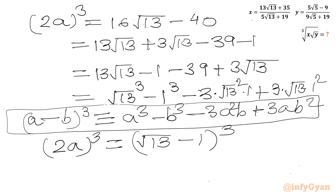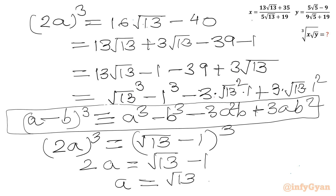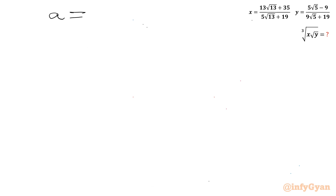So let us take the cube root of both sides: 2a = √13 − 1. So a will be equal to (√13 − 1) divided by 2. Now it's the turn of b. Let me write the value of a: (√13 − 1) over 2.